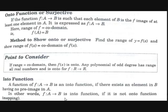Now let's see what is meant by an onto function, or what is meant by surjective. If the function f: A→B is such that each element of B is the image of at least one element in A — meaning every element in set B should be an image — then the range of f equals the codomain. In f: A→B, B is called the codomain, and all the images in set B form the range.